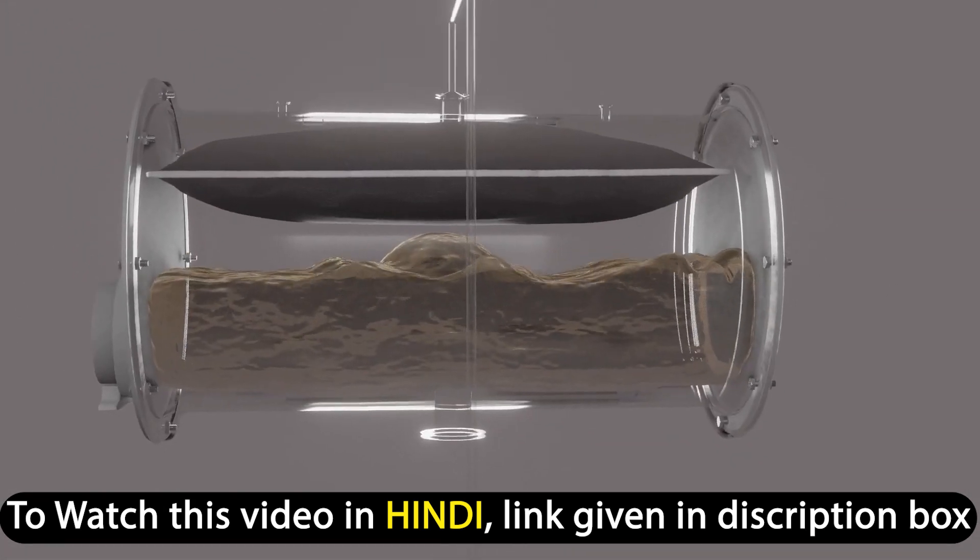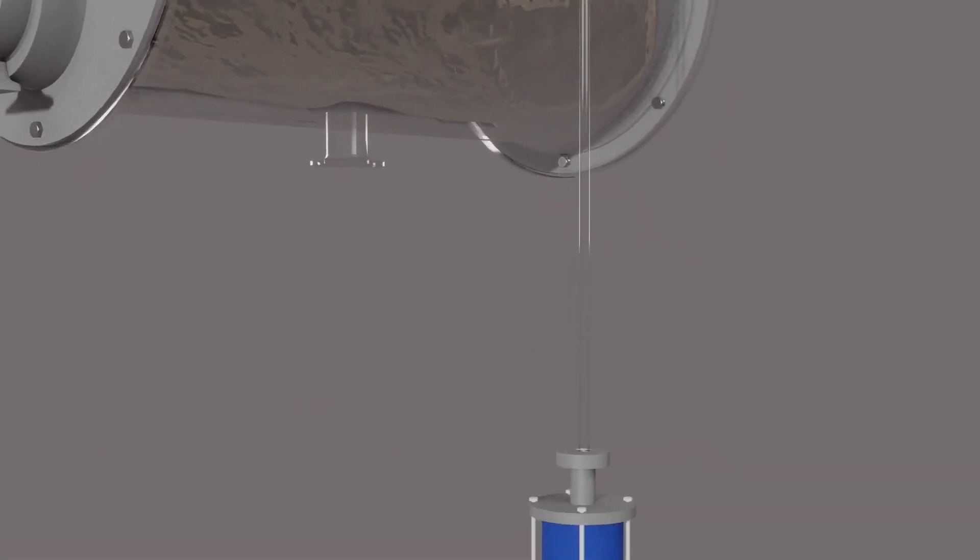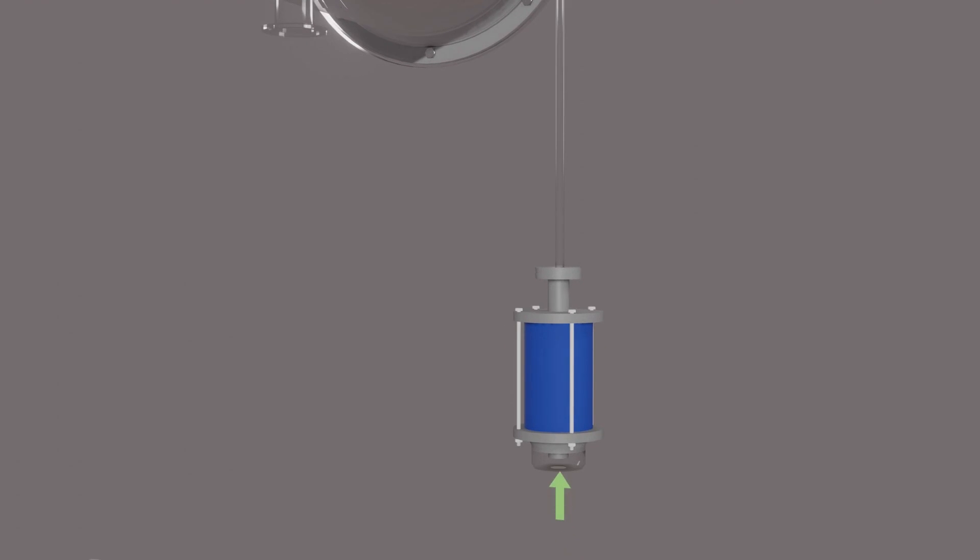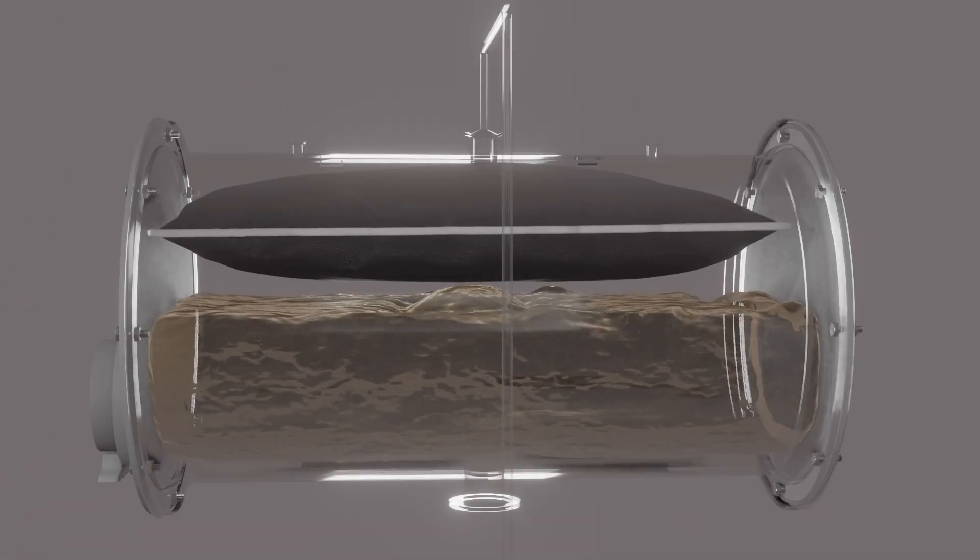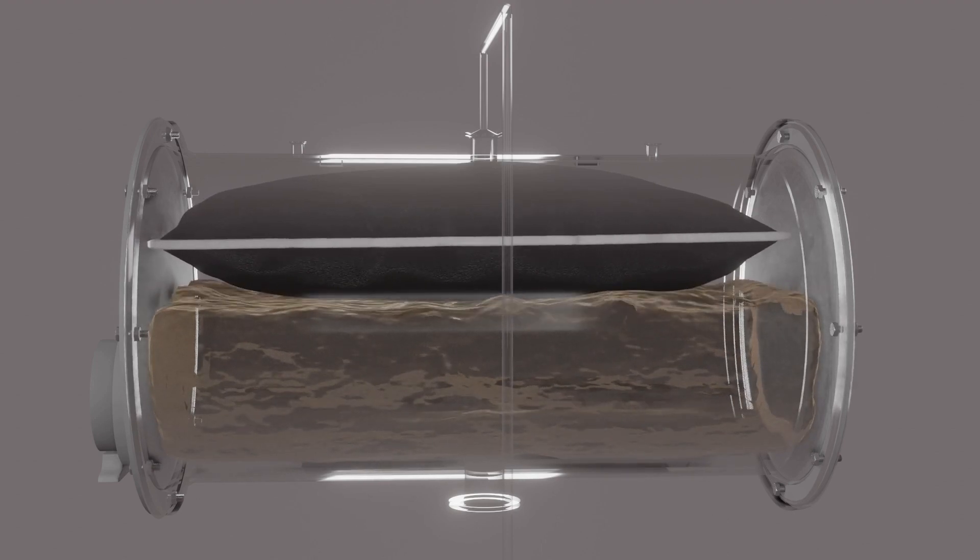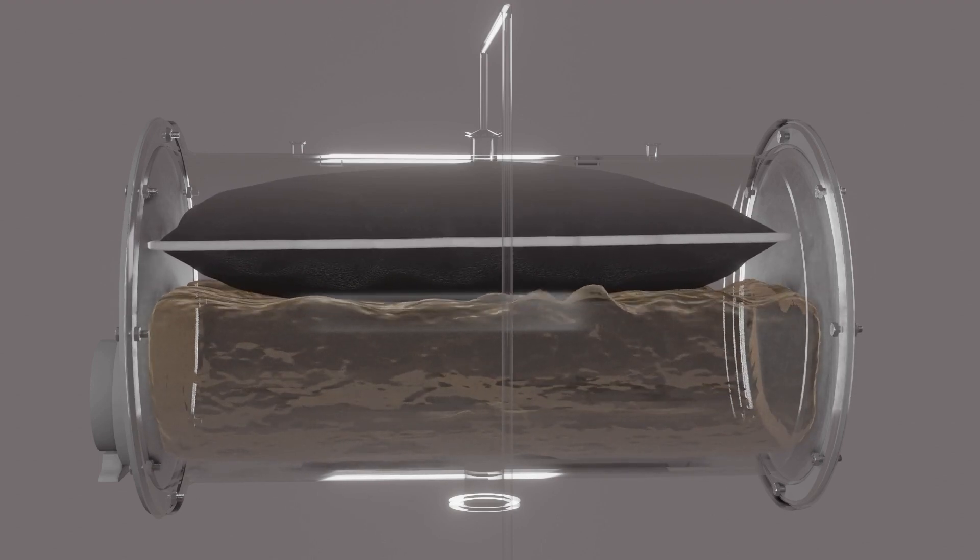Now suppose oil cools down and oil volume reduces. Then atmospheric air comes like this into the air cell and the air cell expands. Now at this time, air cannot come in contact with oil directly, so it will not deteriorate oil or damage the transformer.